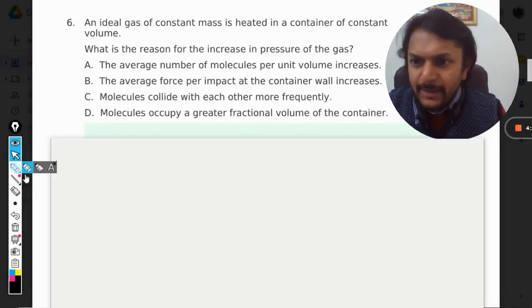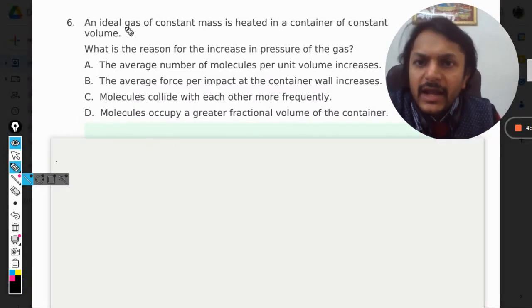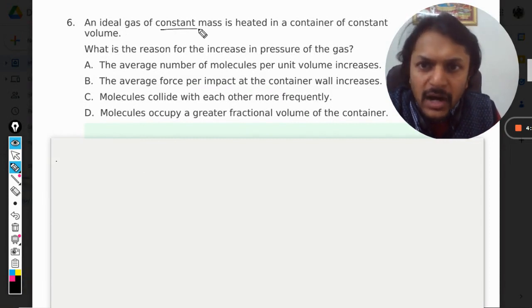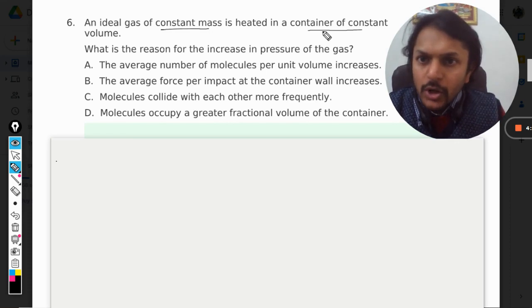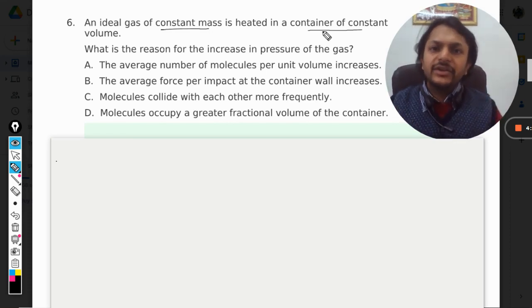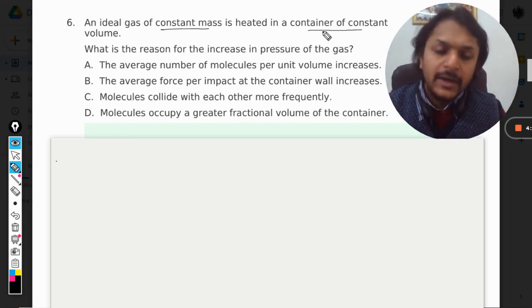Okay dear students, so what is happening in this question? An ideal gas of constant mass is heated in a container of constant volume. What is the reason for the increase in pressure of the gas?